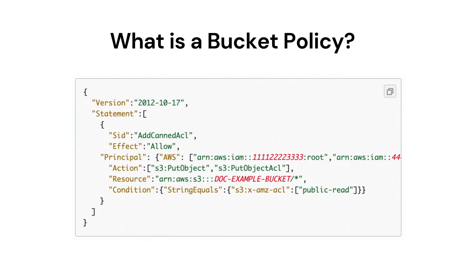Our next question is: what is a bucket policy? A bucket policy is a resource-based AWS IAM policy. You can add a bucket policy to a bucket to grant other AWS accounts or IAM users access permissions for the bucket and the objects in it. Object permissions apply only to the objects that the bucket owner creates. Using bucket policies, we can restrict access for some users at a granular level, like by source IP address.